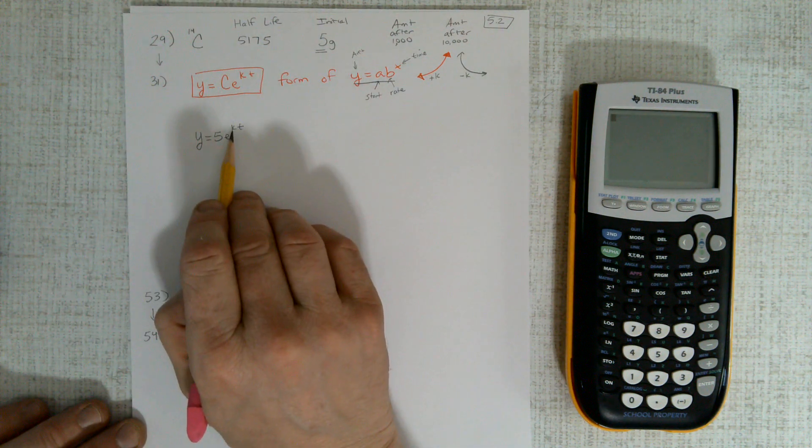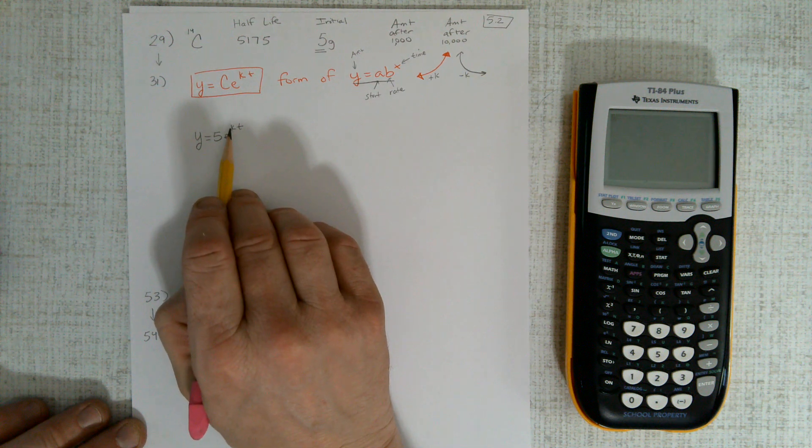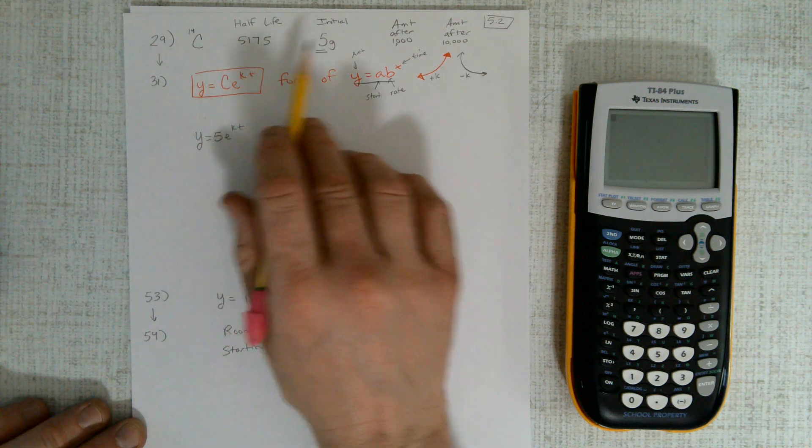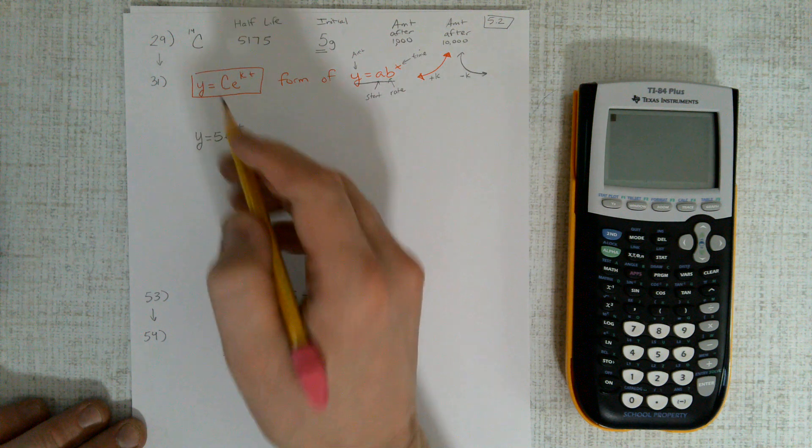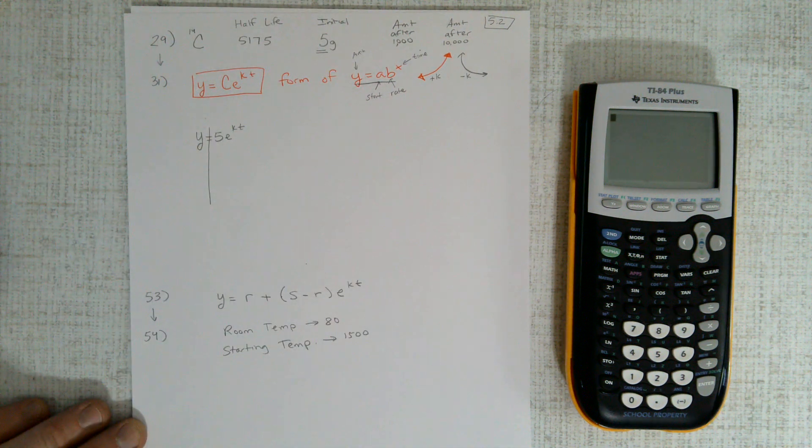But we still haven't figured out what k is. k is a percentage, and it's half-life so it's going down. We have to find this k value.